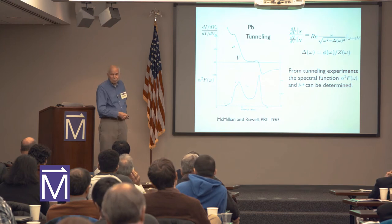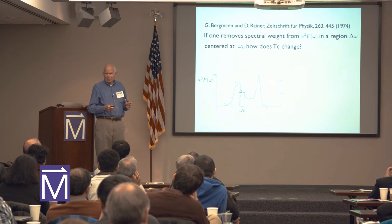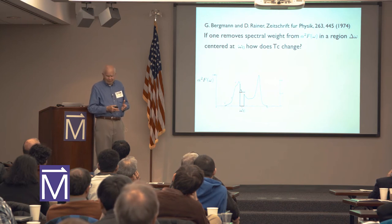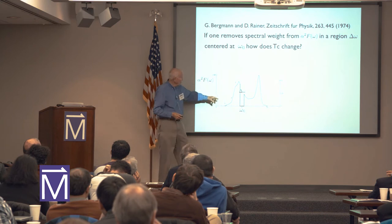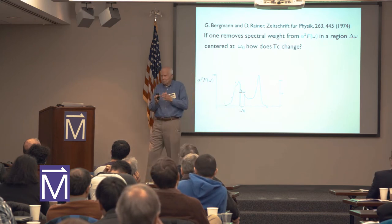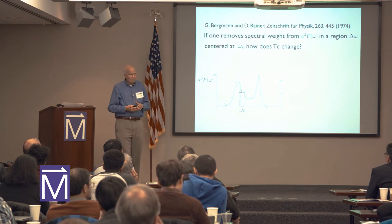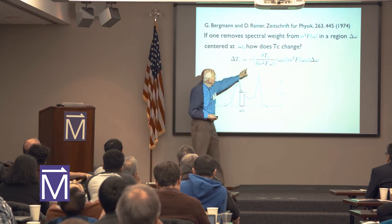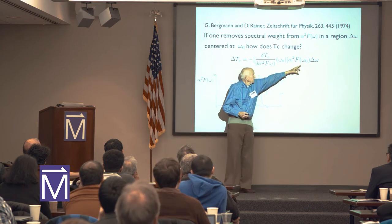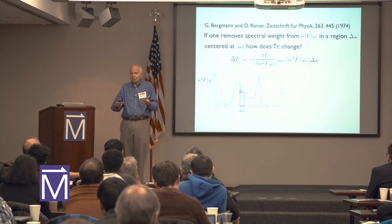Given this, Bergman and Rainier asked what parts of this spectrum are important for TC. They asked in this functional way: suppose you came in and simply cut out a small section and removed it, how would that change TC? It would reduce TC. They used the Eliashberg form and did this calculation of the functional derivative. You pulled out a small region and that weight would show how TC was depleted, and you could tell what parts of the spectrum were important.